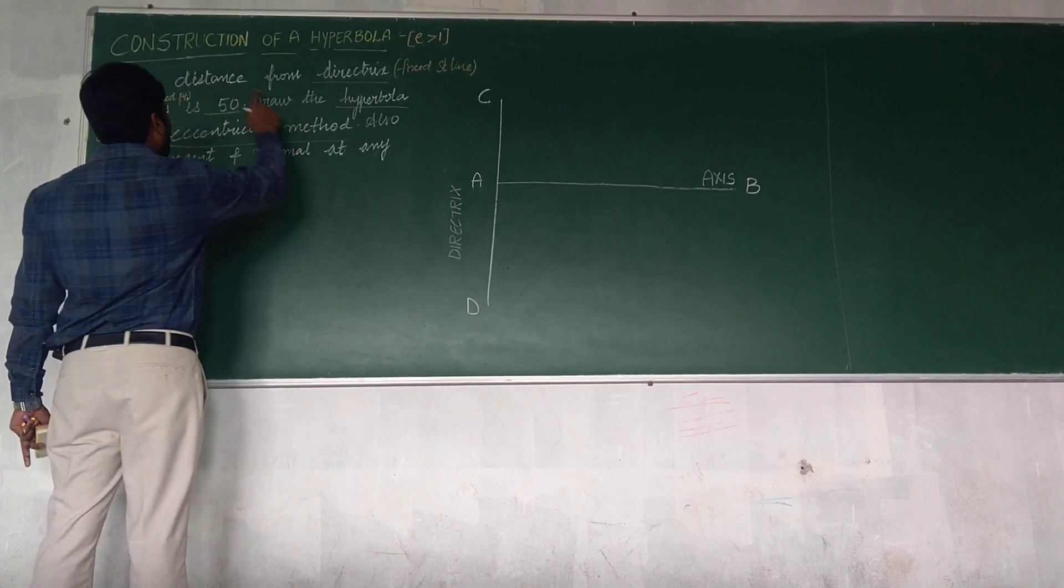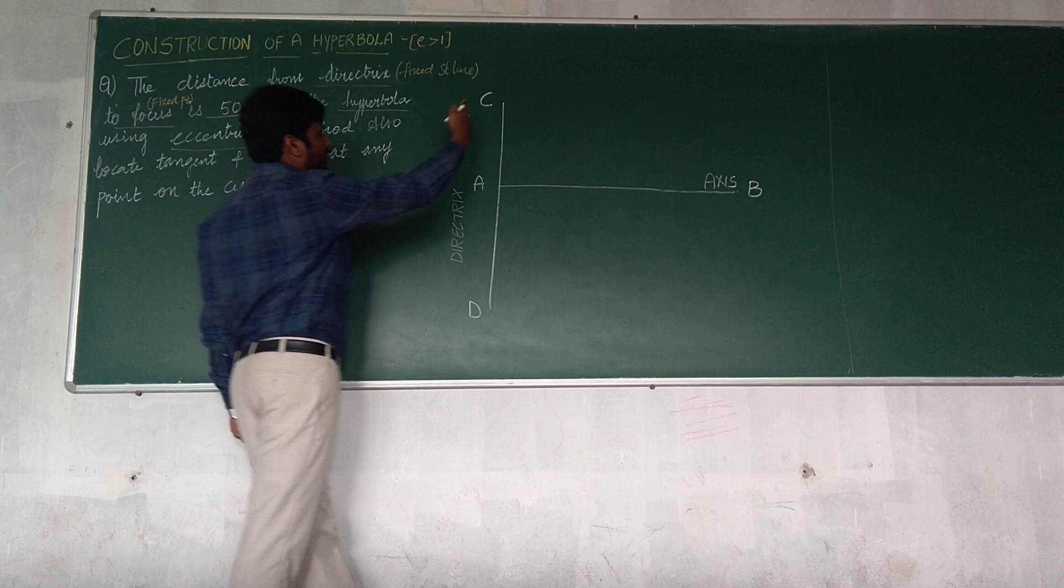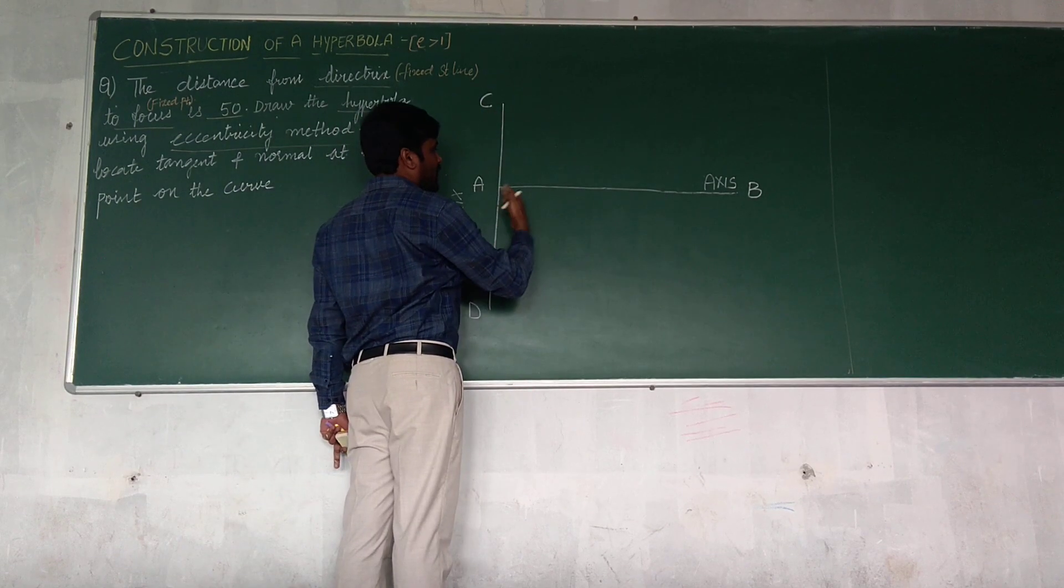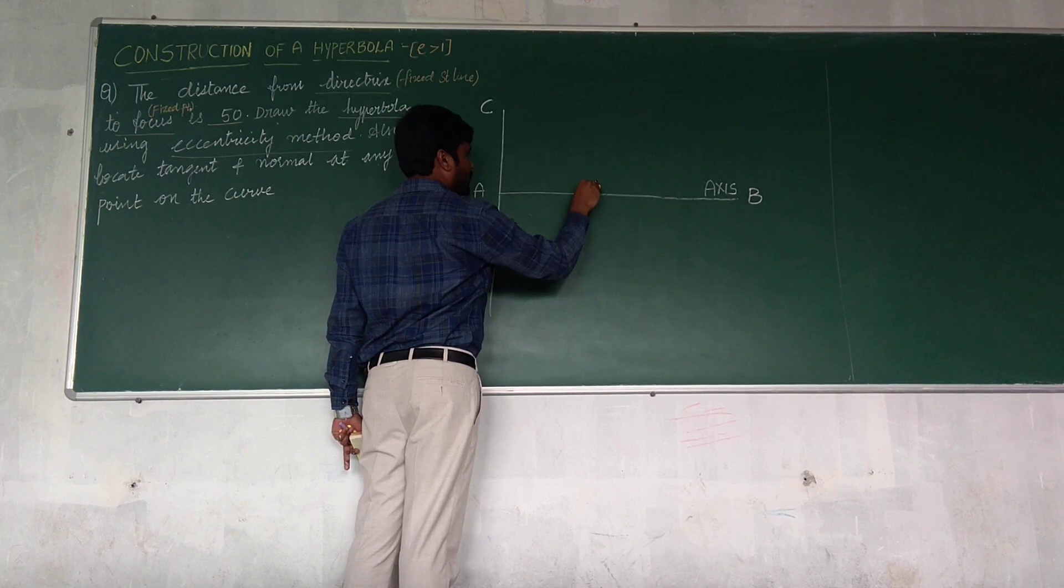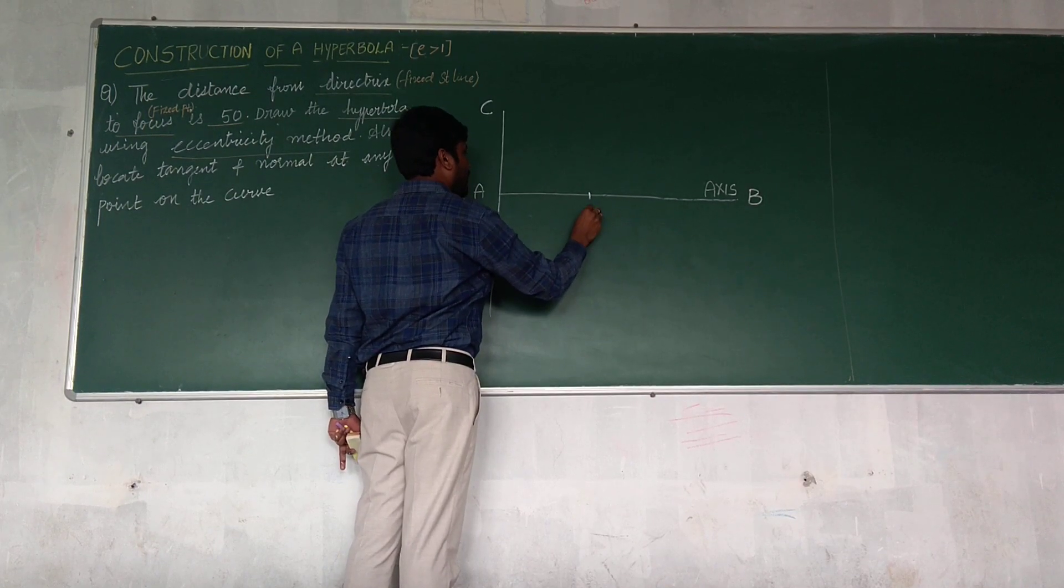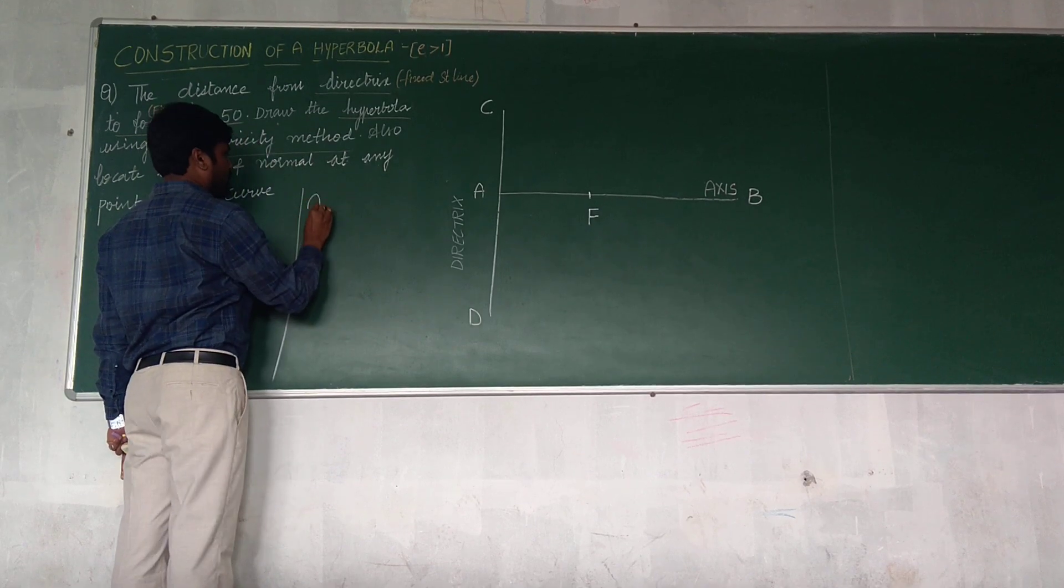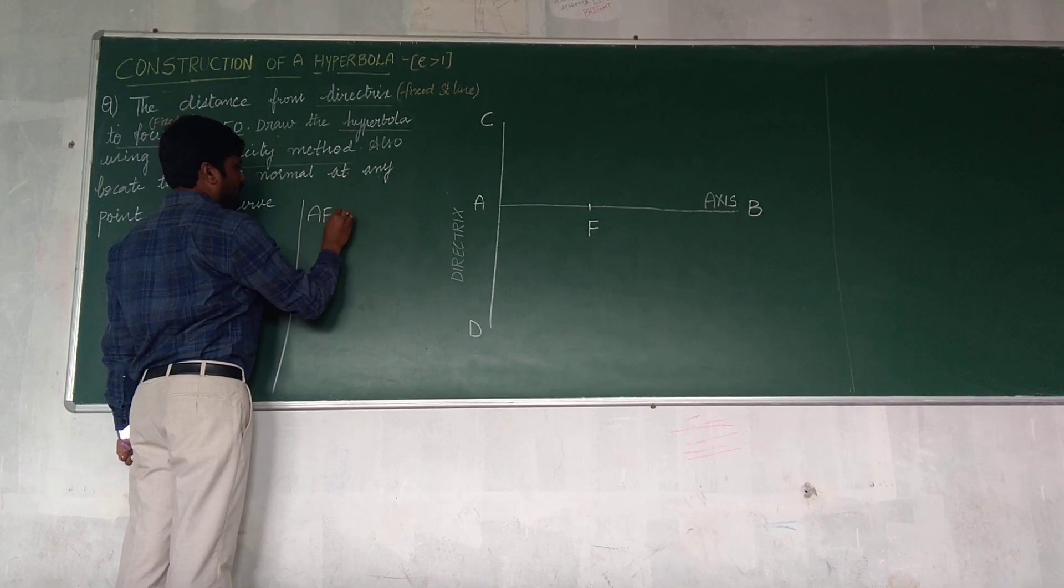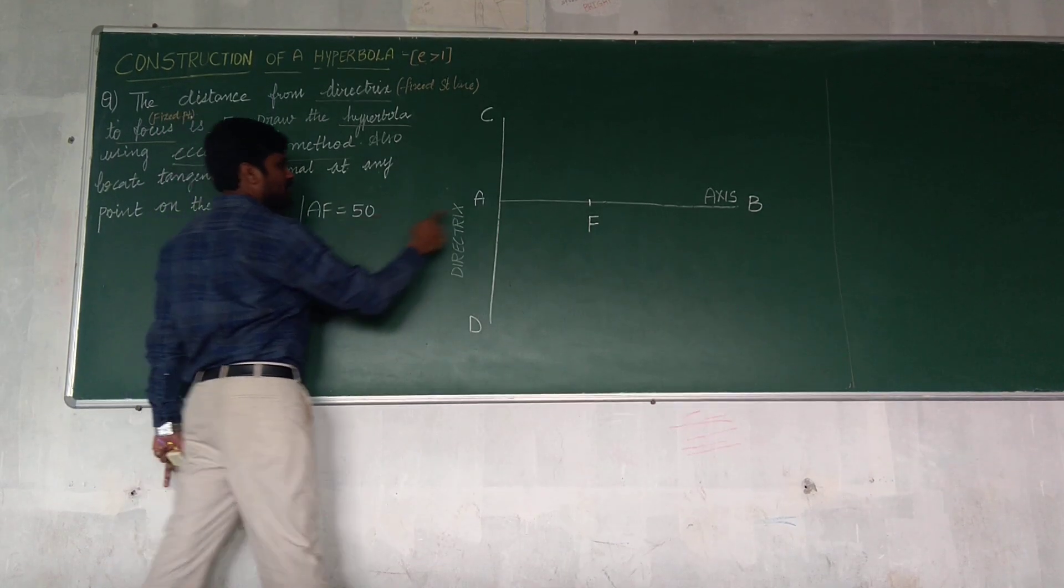My A is axis line and C is directrix or fixed straight line. Now when you look at the question, distance from directrix to focus is 50. From directrix, focus is a point located on the axis. So it is at a distance of 50. Let this be F. So my AF is nothing but 50.